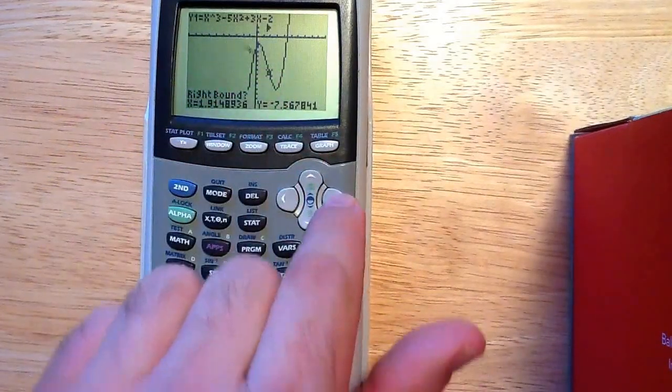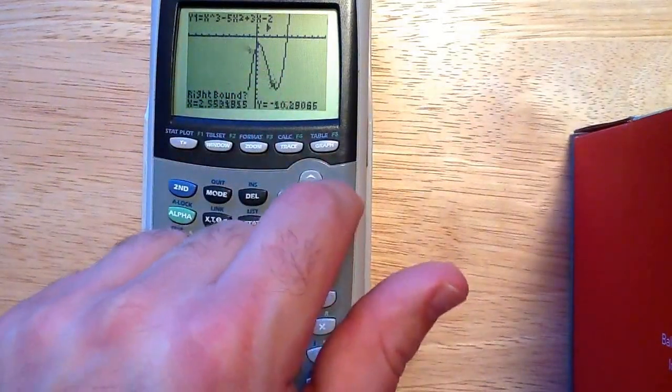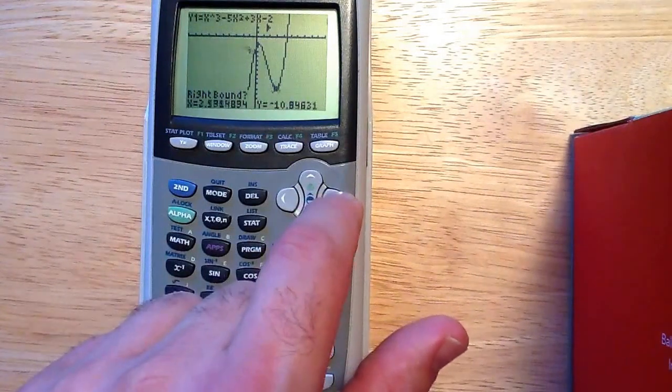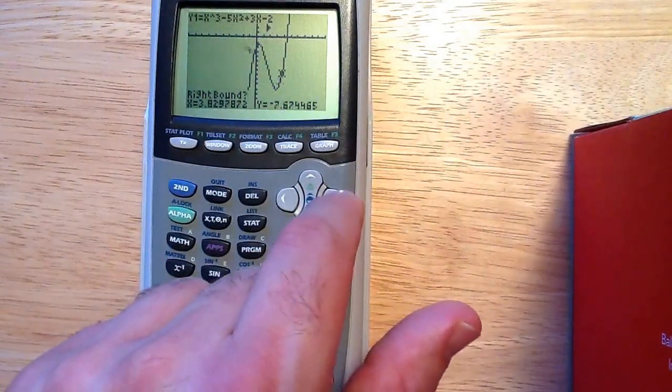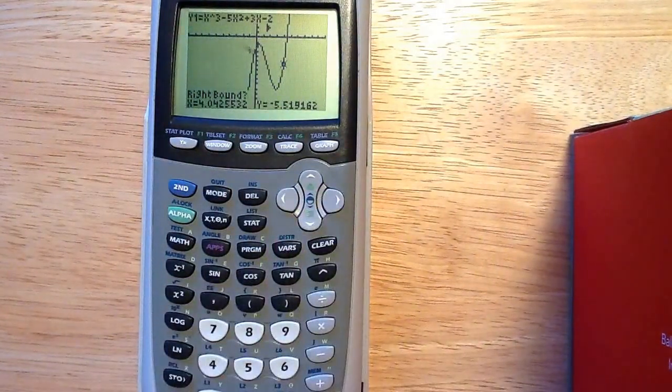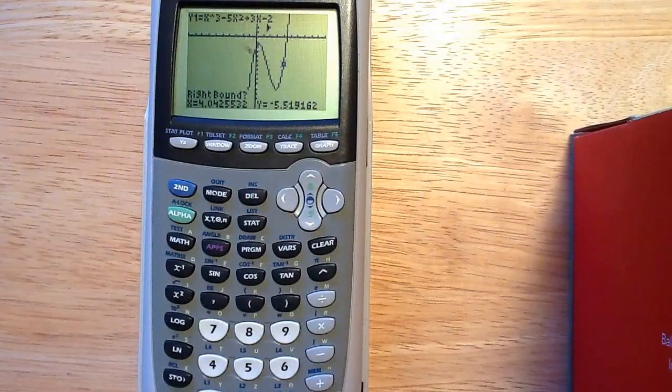It's asking for a right bound. I'm going to do the same thing. I'm going to scroll to the right. I get past my minimum point, it starts coming back up the graph. As long as I'm to the left of it I'll be fine. Press enter.